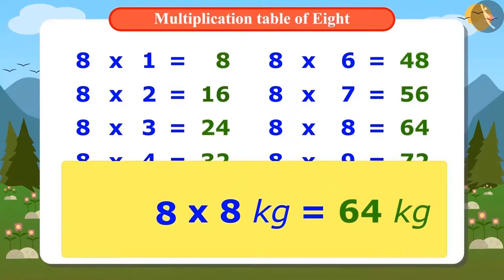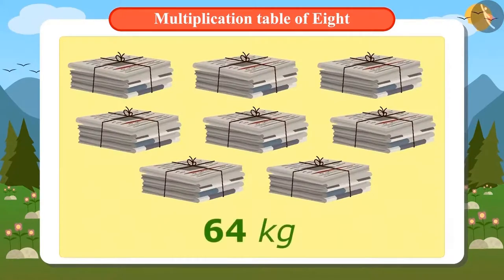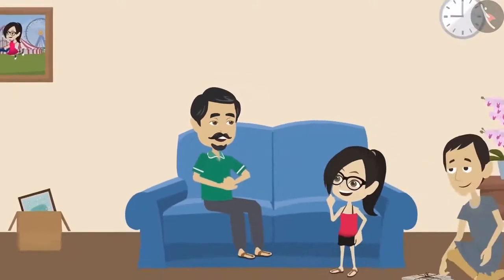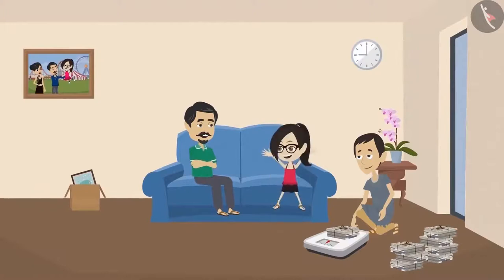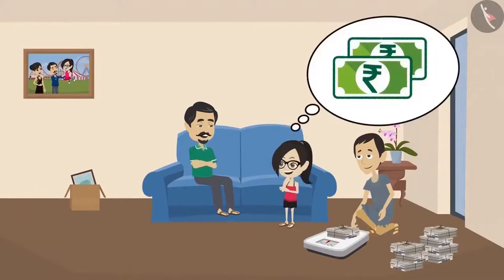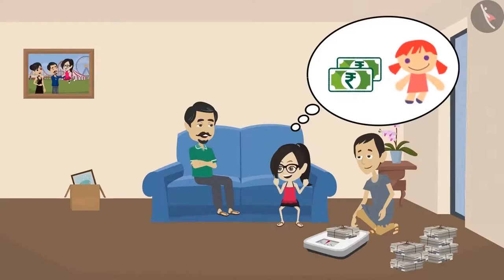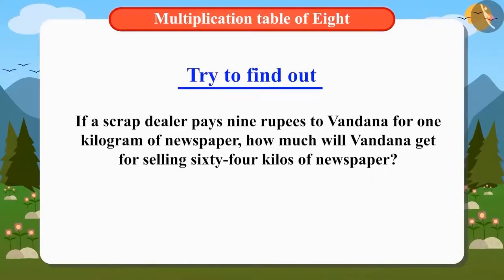These 8 bundles weighed 64 kilos. Vandana's father is happy because she was able to do the calculation accurately without using pen and paper. Vandana is also happy because now she will get money to buy a beautiful doll for herself. If the scrap dealer pays 9 rupees to Vandana for 1 kilogram of newspaper, can you tell how much Vandana will get for selling 64 kilos? We will learn to solve such questions in the next video.